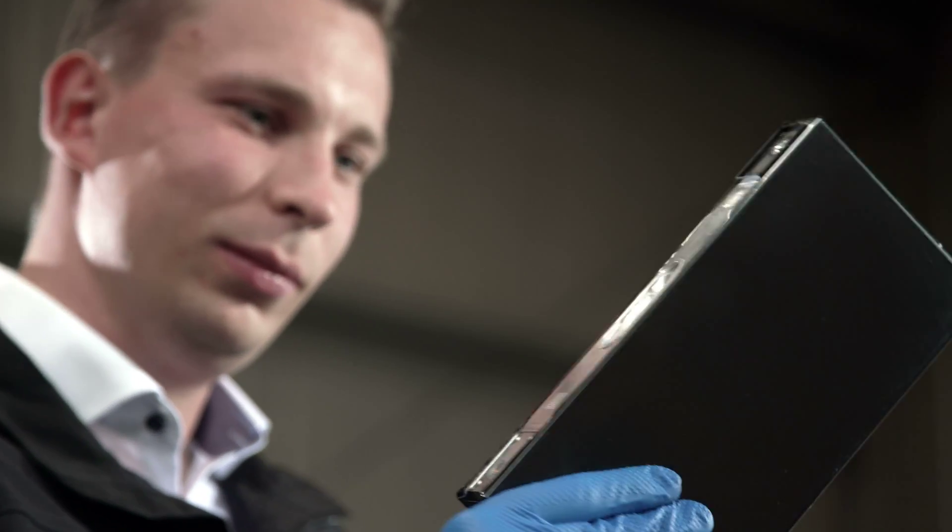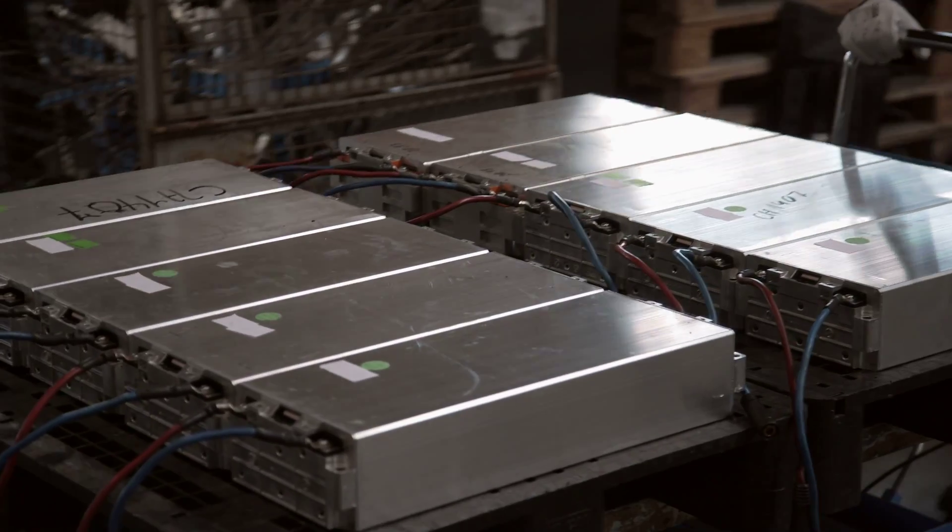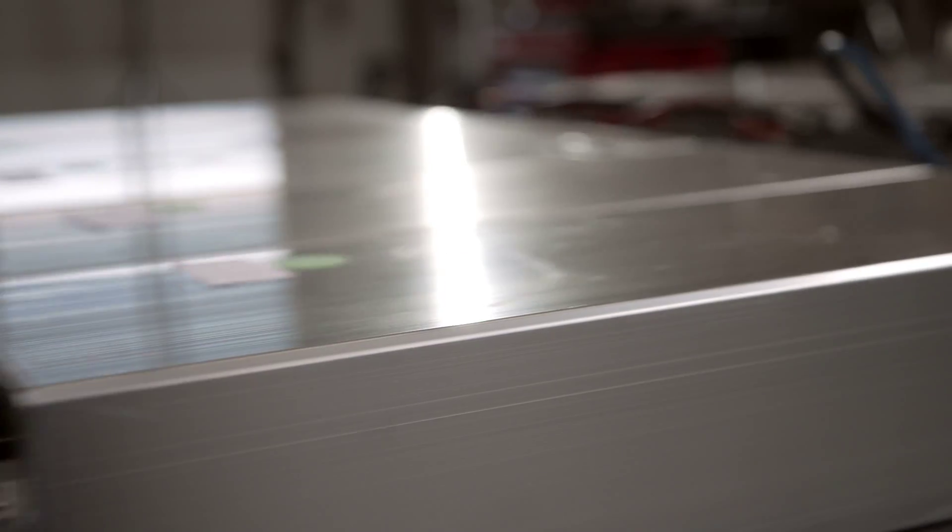Ultimately, cathode and anode cells with an area of over 400 square meters store the energy to power an electric vehicle.